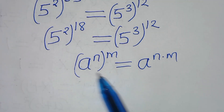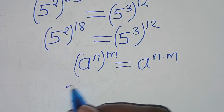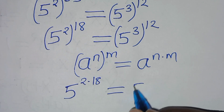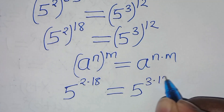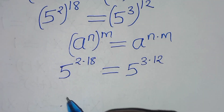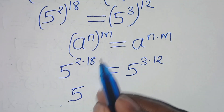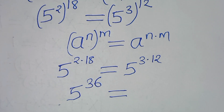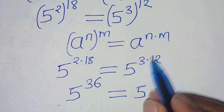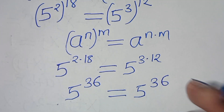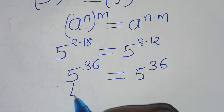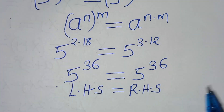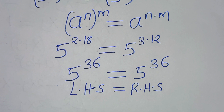We have 5 raised to the power of 2 times 18, equal to 5 raised to the power of 3 times 12. Therefore, 5 to the power of 36 equals 5 to the power of 36. It is clear that the left-hand side equals the right-hand side, which implies that the value of x equal to 1 plus log₃ base 6 actually satisfies the equation.